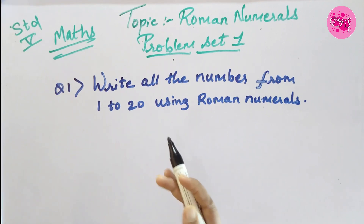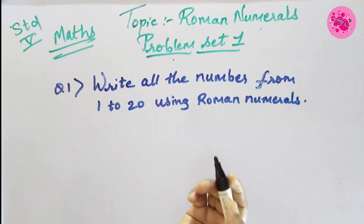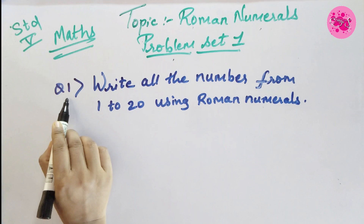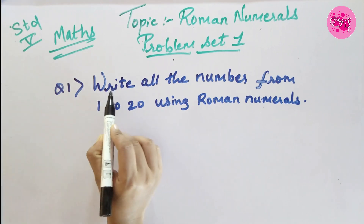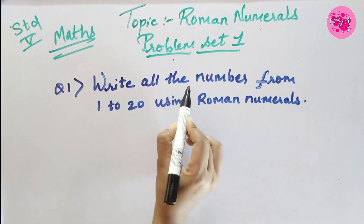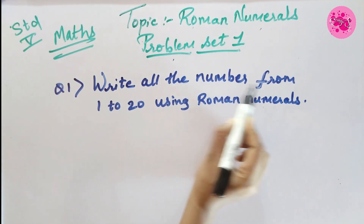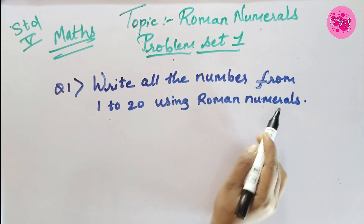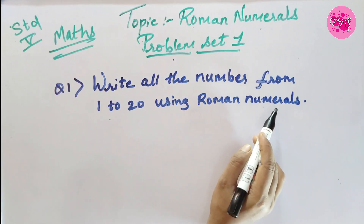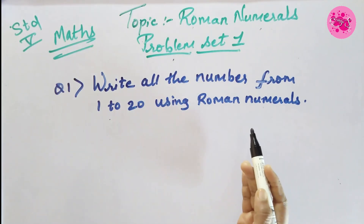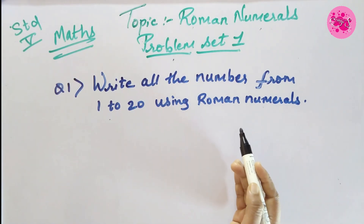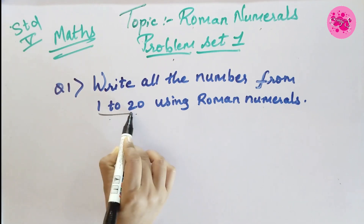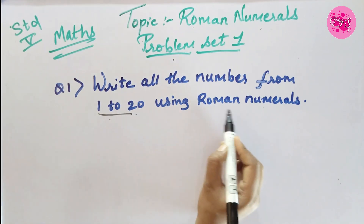So let's start with Problem Set 1. Question number 1: Write all the numbers from 1 to 20 using Roman numerals. Here it is said that we have to write 1 to 20 in Roman numerals.